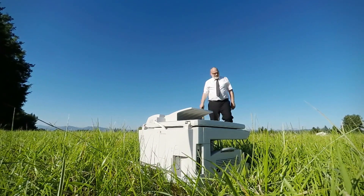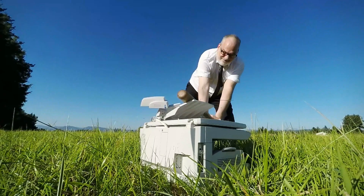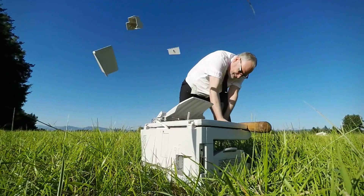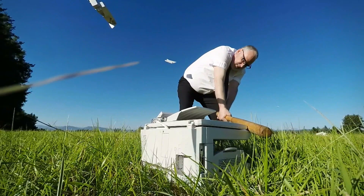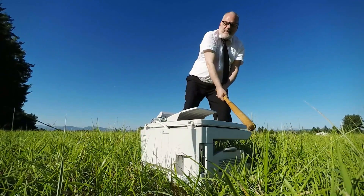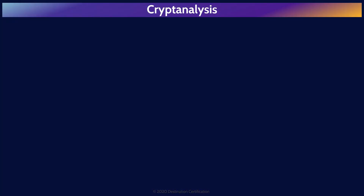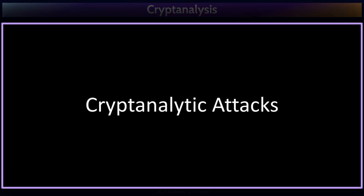In the last two videos, we talked about all the wondrous things we can do with cryptography. Now let's talk about how we can break it. Cryptanalysis is the art and science of understanding how cryptosystems work so that you can find ways to defeat them—or strengthen them if you want to have less fun. Cryptanalysis is the process of decoding secrets and gaining access to encrypted messages and even forging new messages. There are two major types: cryptoanalytic attacks and cryptographic attacks.